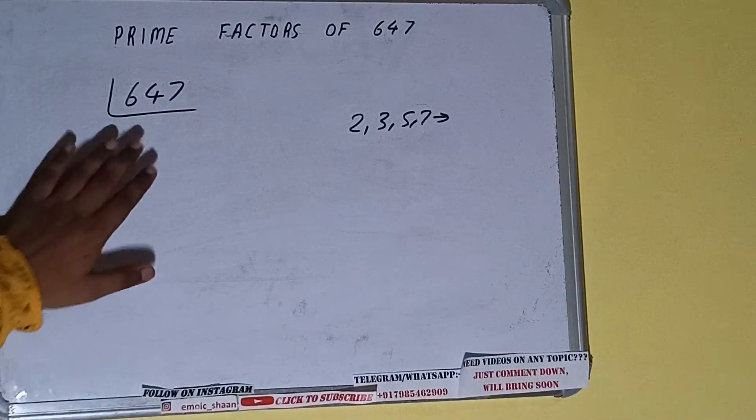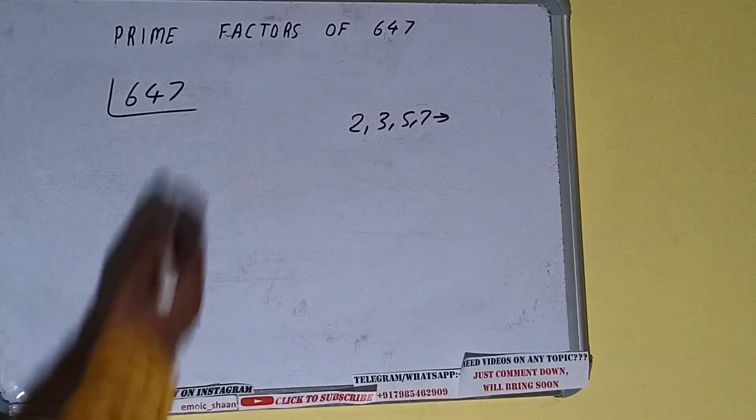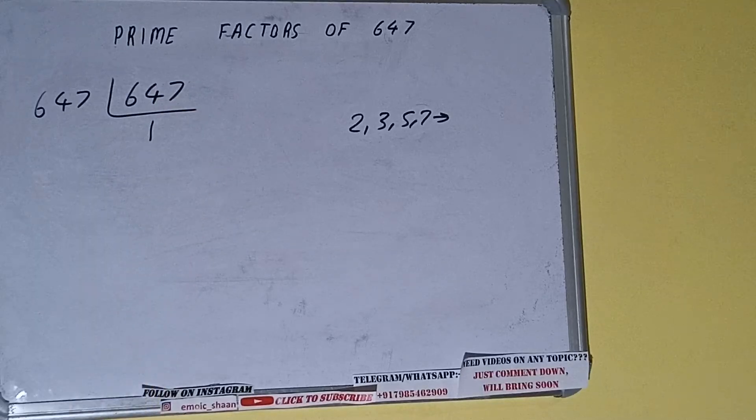So if we talk about the number 647, the number 647 is also a prime number. So it is only divisible by itself, that is 647, and once we do so we'll be getting 1.